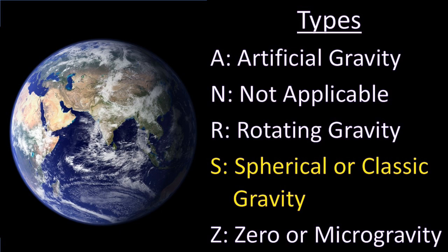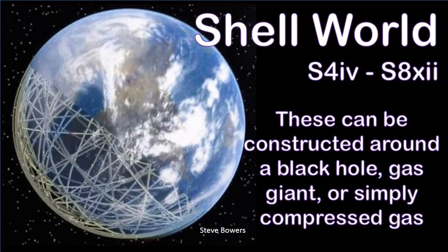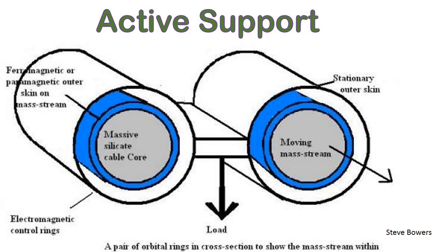Our next major category is spherical gravity, classic gravity. Now this is a much bigger category than you initially think. We're not just talking about large moons, classic planets. We're also including shell worlds. Examples of this would be where you construct the board around a large object, like a black hole, which could be smaller than a planet, or larger because it's an artificial black hole, or around a gas giant, or even just compressed gas.